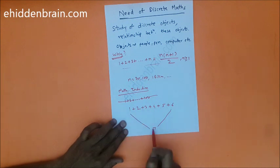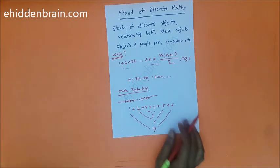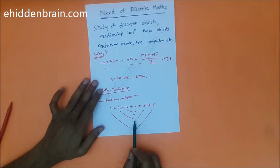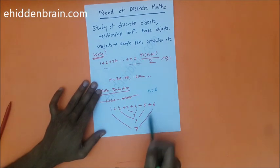He found one pattern here. You add first and last number, you get seven. You add second and second last number, you get seven. You add third and third last number, you again get seven. You got seven, which is n plus one.